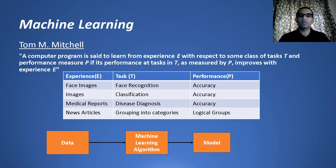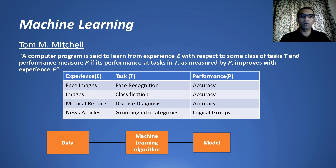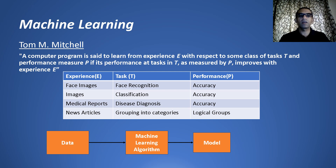The whole idea is that as the computer algorithm looks at more data, it keeps improving itself on certain tasks as measured by some performance measure. For instance, in the problem of face recognition, the experience E is a set of images of the face, the task is to recognize the face, and the performance is how accurately the algorithm recognizes your face — for example, it should unlock the smartphone if it is your face and not unlock it if it is somebody else.